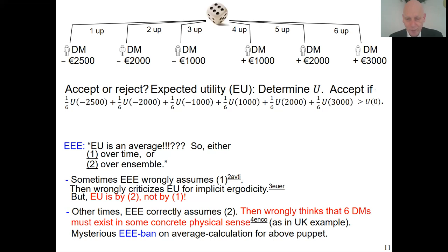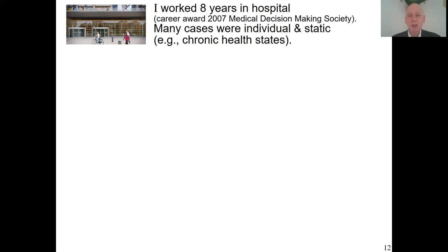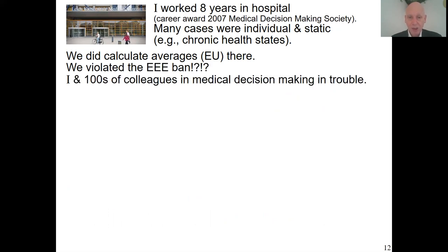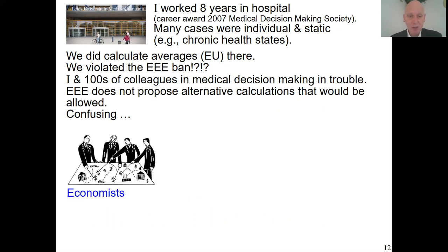To continue, let me tell you about applied work I did. For eight years I worked in a hospital. Many cases were at the individual level — single decision-maker, with chronic health states. We did use expected utility to recommend optimal treatments for patients. But Ergodic Economics puts a ban on it — not allowed. Not only us, but the whole field of medical decision-making does this for individual decisions, and EE's ban hits all of them. The problem is EE says you cannot calculate an average but doesn't say what calculation would be allowed, so we don't know what to do. For clarification, we should go to the economic literature and see how economists themselves justify expected utility maximization in medical decision-making. That question deserves attention, but Ergodic Economics never pays attention to it.